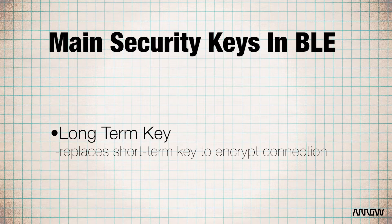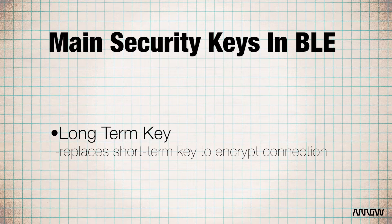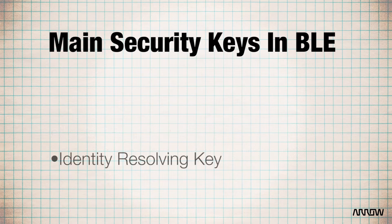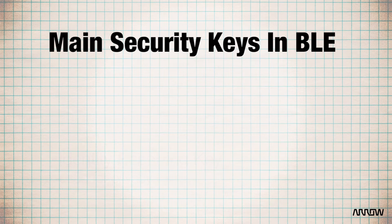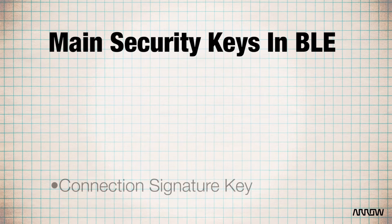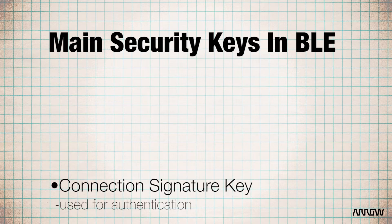The long-term key replaces the short-term key to encrypt the connection. The identity resolving key is used for privacy and allows Bluetooth Low Energy, using what looks like a random address setup to an eavesdropper, to hide who's talking to who. And there's the connection signature key, which is used for authentication.